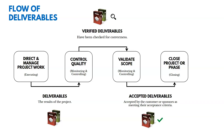In this knowledge area, we're also going to be validating scope. Validating scope means taking deliverables we've checked for quality as a team and getting acceptance from the customer. Verified deliverables — those we've checked for correctness — are an input to this process. The output, hopefully, is accepted deliverables: deliverables accepted by the customer or sponsor as meeting their acceptance criteria.